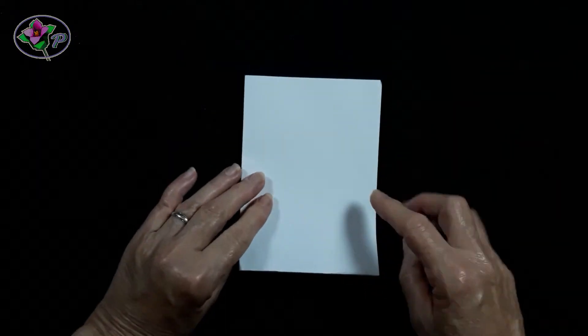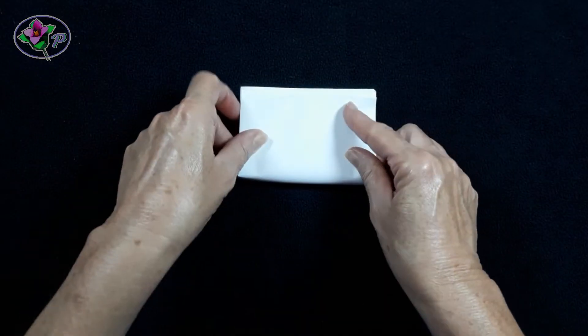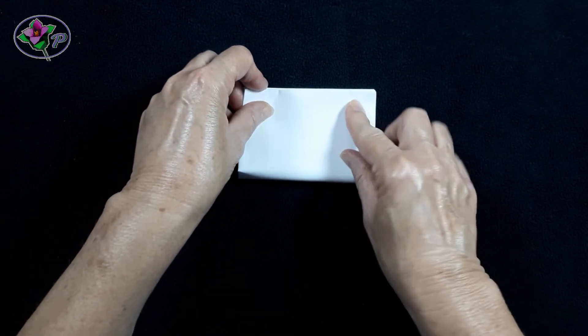Step 3. Fold the paper in half again. Now the paper has eight layers.